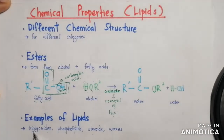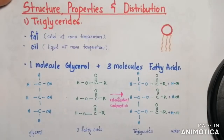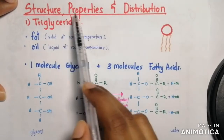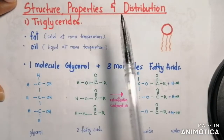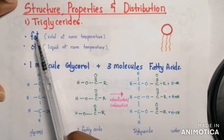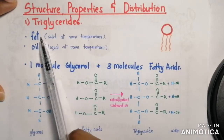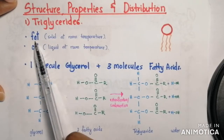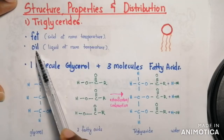Now in this video we study on triglycerides; in the next videos we will study more on phospholipids and steroids. So the structure, properties, and distribution of triglycerides: if triglycerides are solid at room temperature, they are called fat. If it's liquid at room temperature, it is considered as oil.